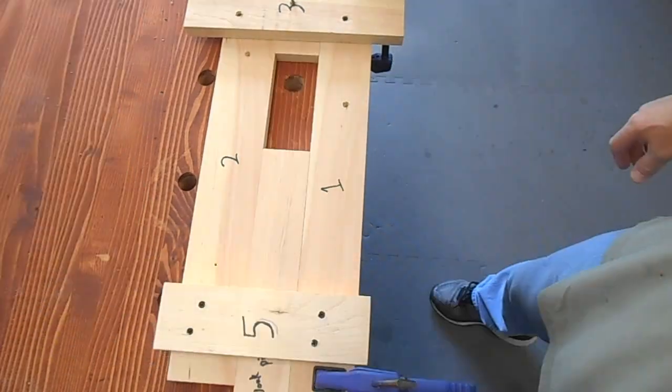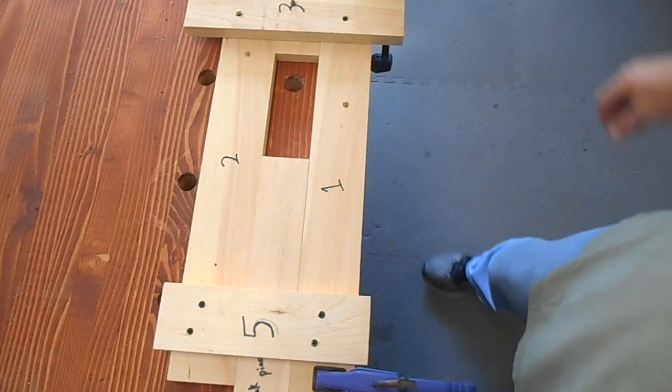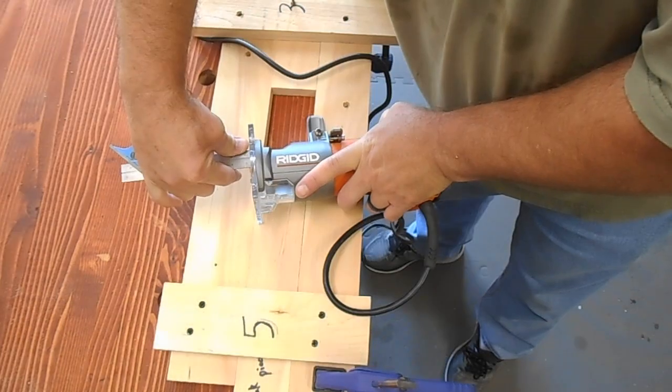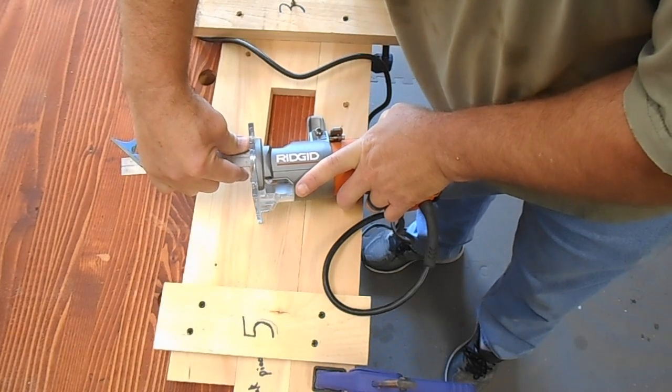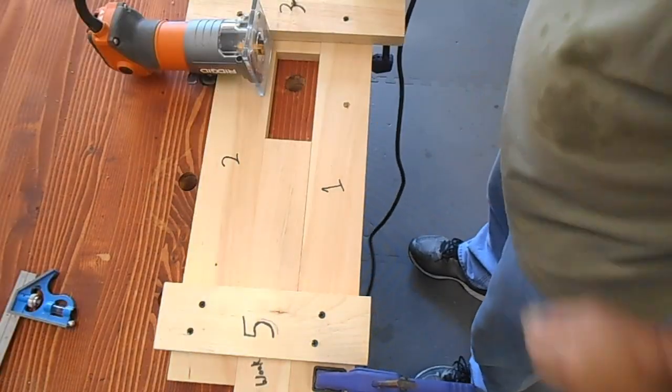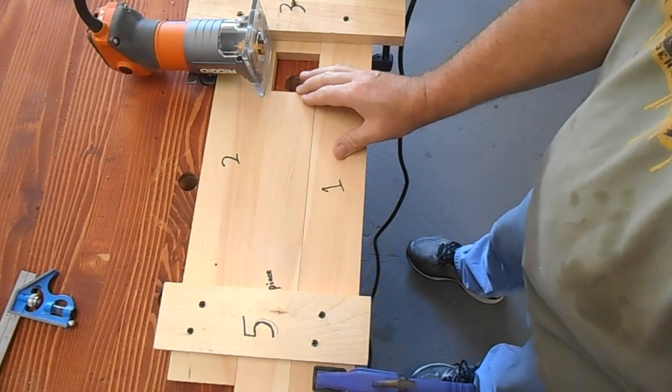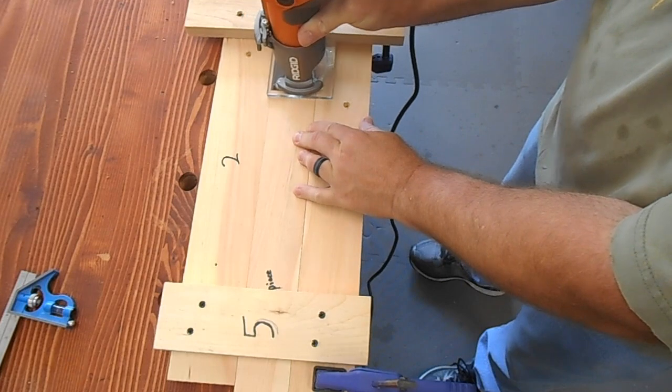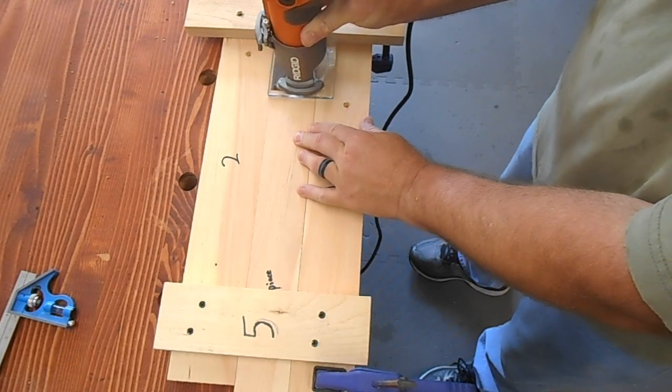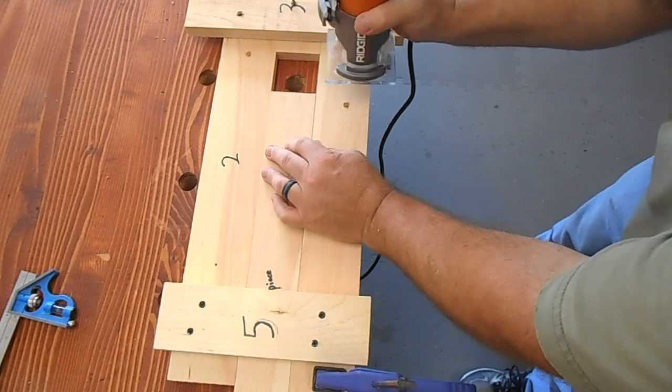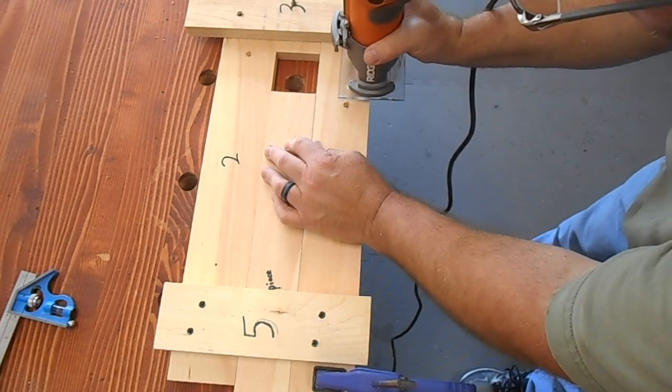I use drywall screws on mine. Then set the depth of your router bit to whatever depth you choose for the size workpiece and the size tenon that you want. Then slide your stop and your workpiece up so that your base of your router is against the fence, but the bit is not touching your workpiece. You do not want it touching your workpiece.